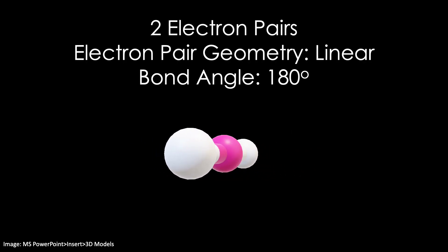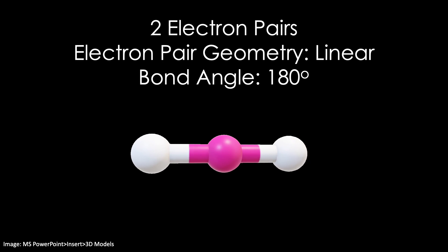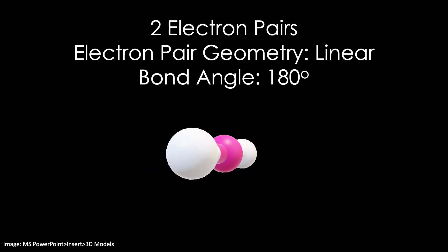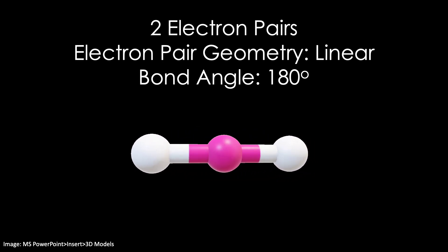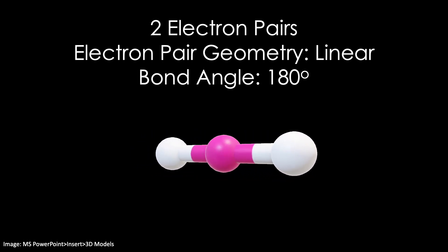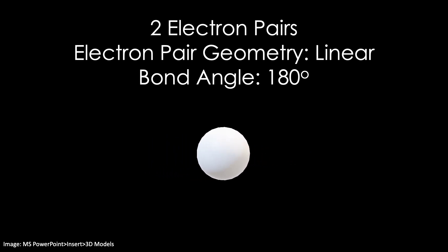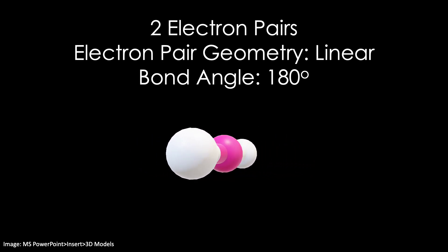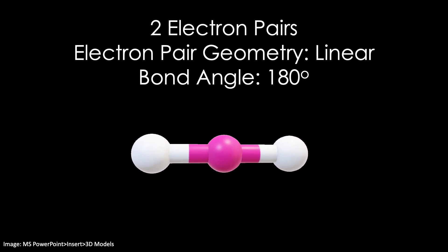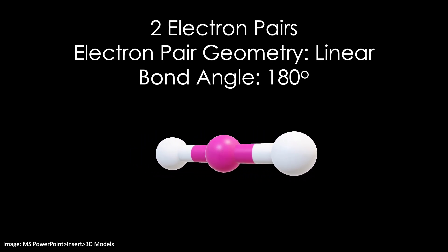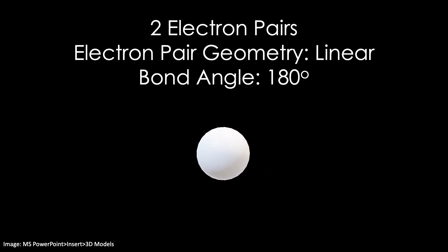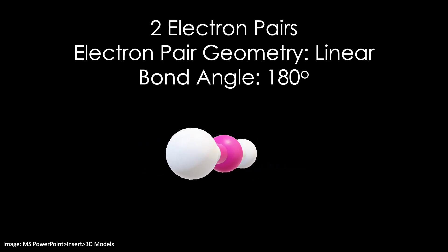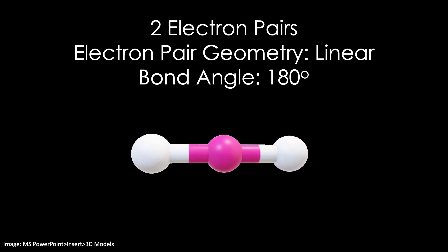Imagine there's an atom, and there are two other atoms around the central atom. These atoms are bound by a pair of electrons — this is called the covalent bond, or shared pair of electrons. When there are only two electron pairs, the optimum electron pair geometry is linear, with a bond angle of 180 degrees. This makes sense: the electron pairs are farthest from each other.